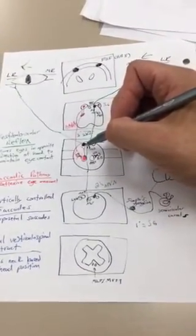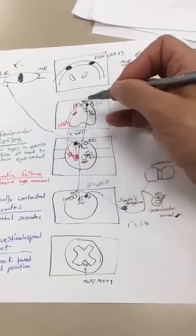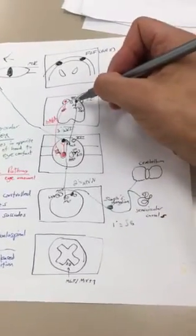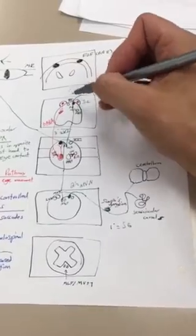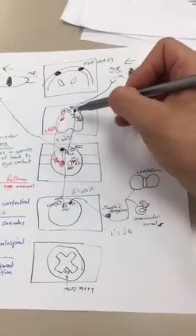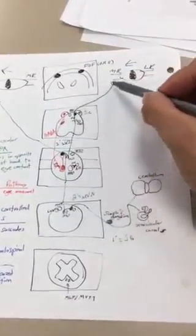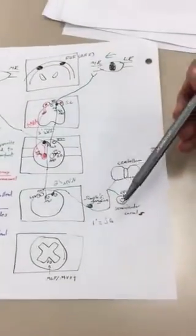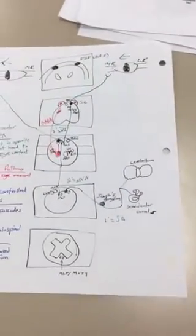Sixth nucleus will also send an impulse decussating again and then ascending through our MLF to reach the third nerve or the oculomotor nucleus. Oculomotor nucleus will then send a nerve to innervate medial rectus, moving the eyes right, which is opposite of this original sensation.